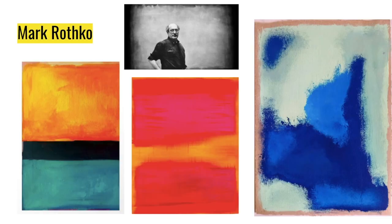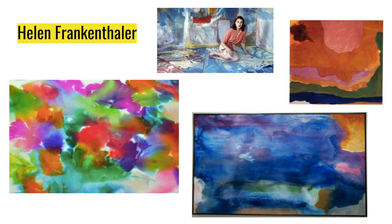Here are some paintings by Mark Rothko, who is well known for his blurry lines and sort of blocks of color. And lastly, some pieces of work by Helen Frankenthaler, who used a lot of watercolor in her abstract expressionism.